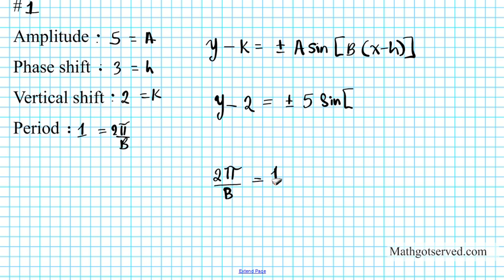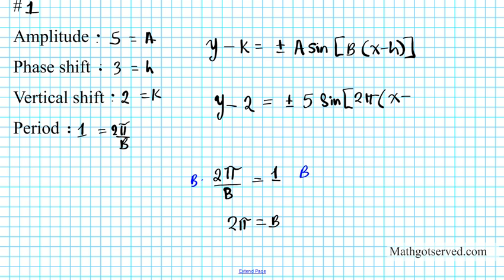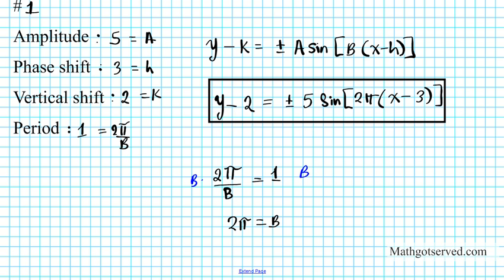So if I solve this equation for b, I can multiply both sides by b — it's the same thing as cross multiplying. Multiply both sides by b, and you end up with 2π equals b. So b is 2π. I'm going to place 2π times x minus h, where h is 3, giving x minus 3. And there goes the equation of the sine curve. Remember, it's plus or minus.